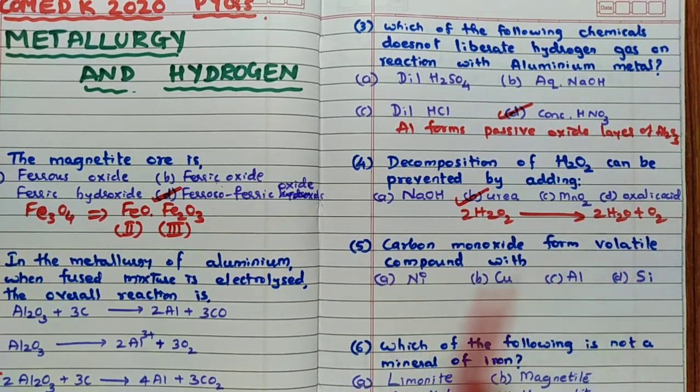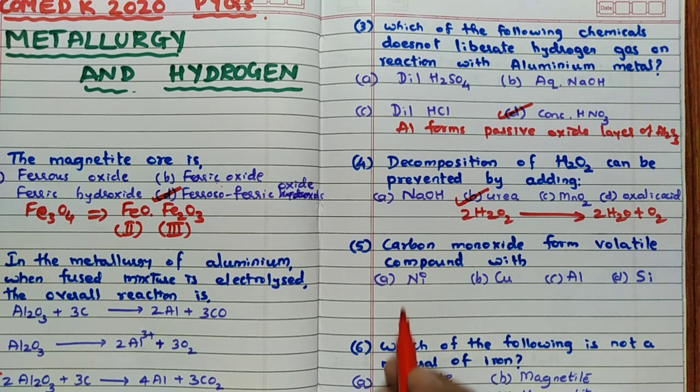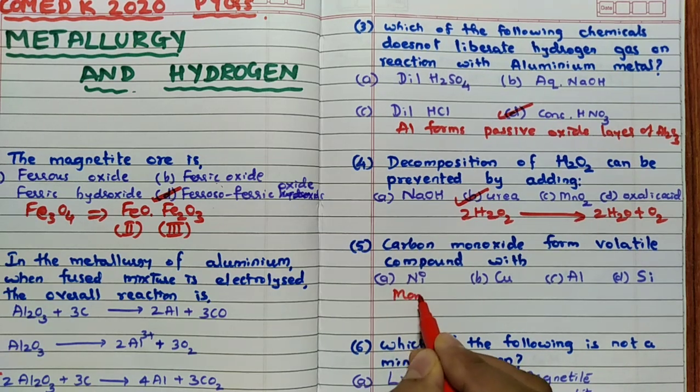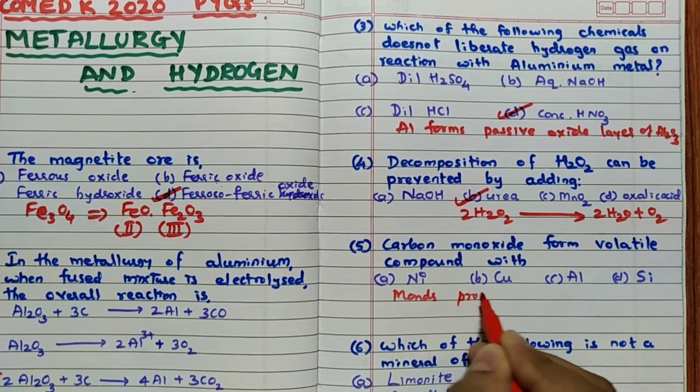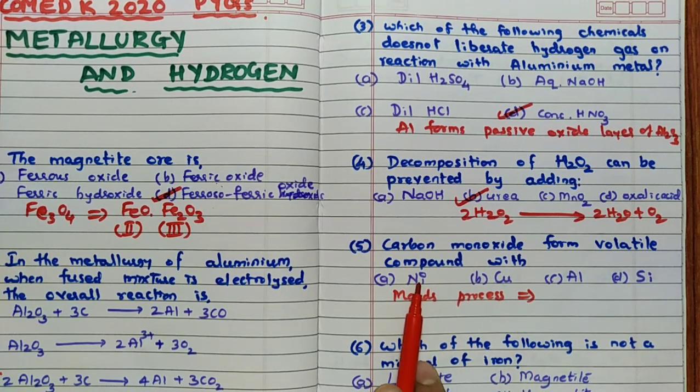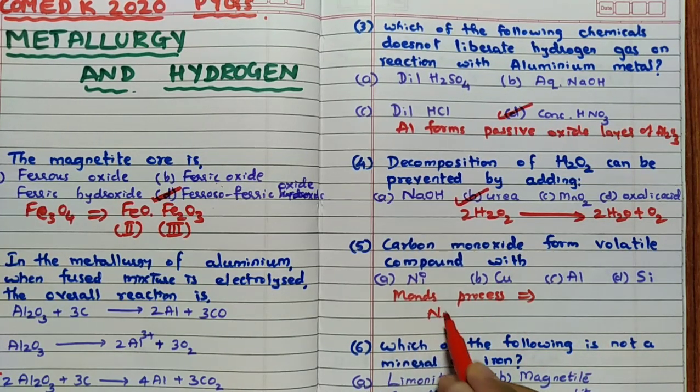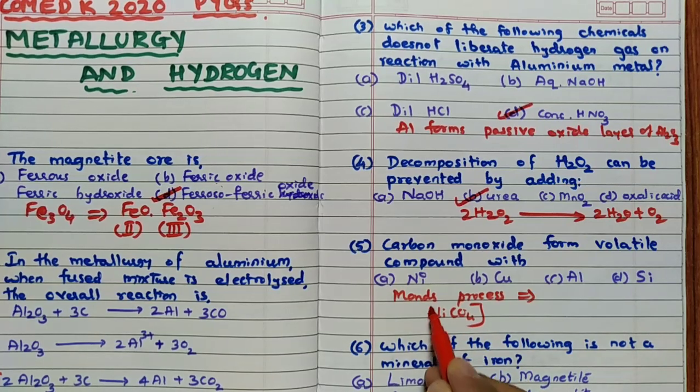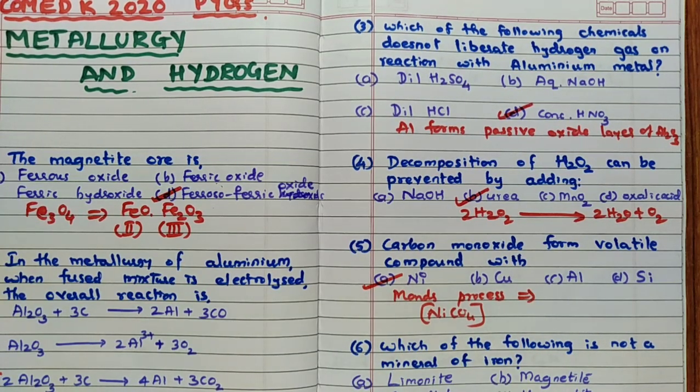Carbon monoxide forms volatile complex. Remember carbon monoxide and these metals in which process will come across? Yes, Mond's process. So Mond's process in which this nickel and carbon monoxide form NiCO4 complex. This was volatile complex. Hence the answer for this question is nickel.